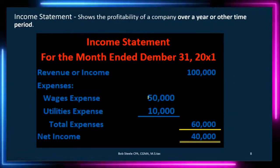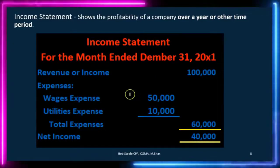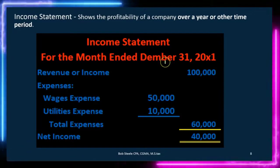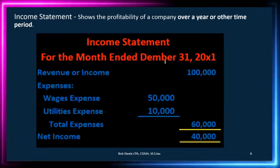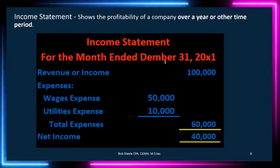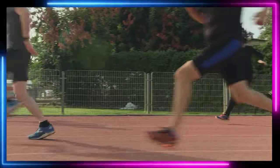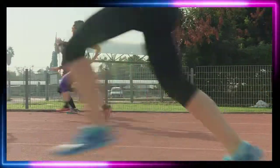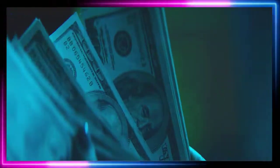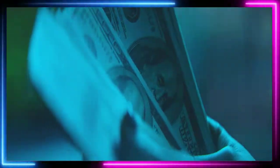The income statement shows the profitability of a company over a year or other time frame. The key thing to note is that it has a time frame — for example, the month ended December 31st means the time frame is December 1st to December 31st. Think of the income statement as asking: how did you do over time? Similar to running a race, it has to have a beginning and an end. If we ask someone how much money they make, they need a time frame — are you talking about a year, a month, or a pay period? We need a time frame to answer those questions.